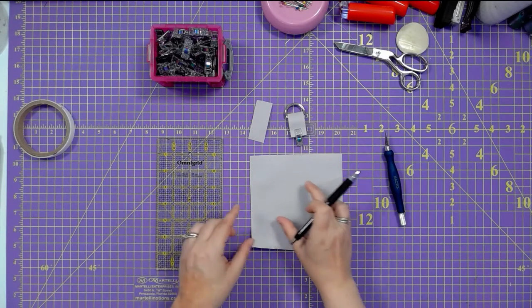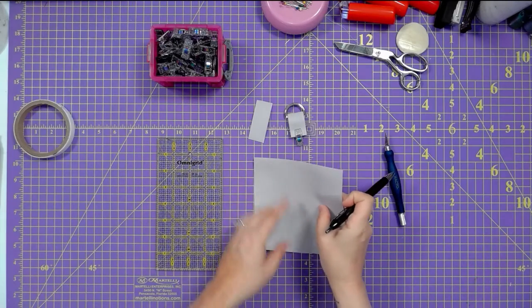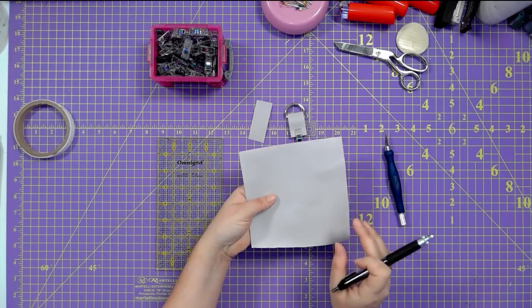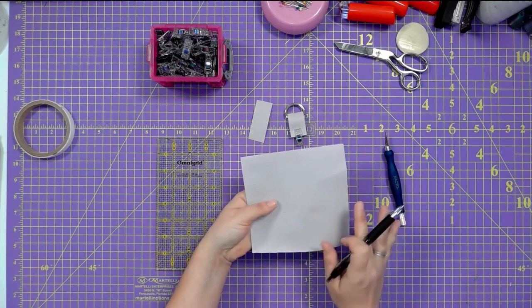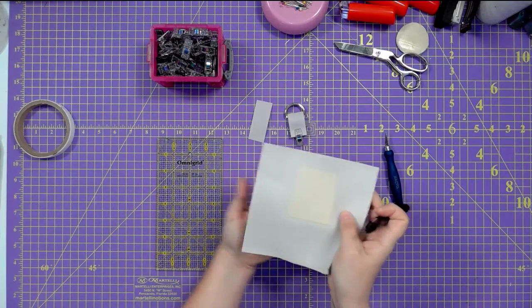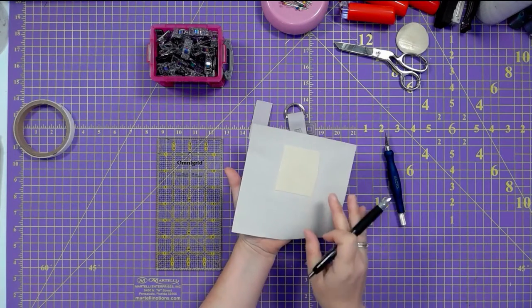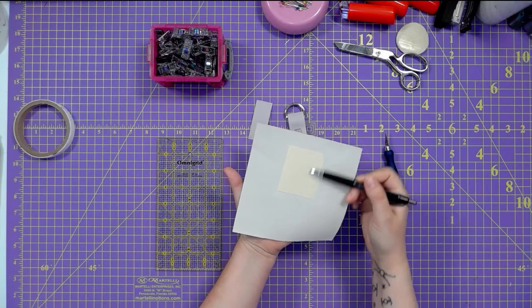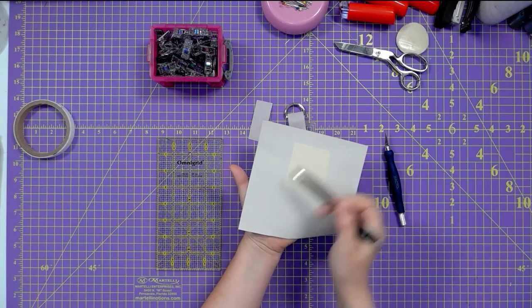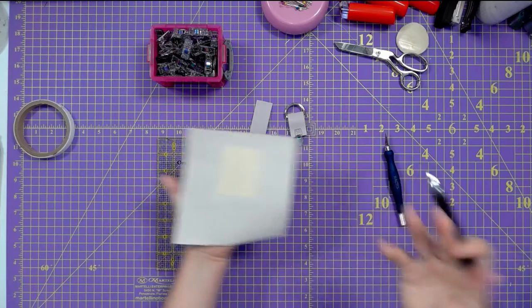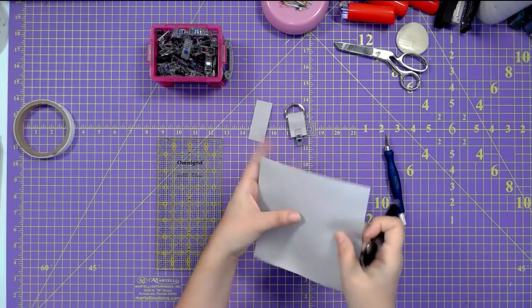At this point, we have all the pieces that we need to start making the hidden connector. So what you want to do, and in case you're wondering, this exterior fabric, pretend this is your bag, should be interfaced just for the purposes of this demonstration. I put a very small strip of Decovil on the back here.